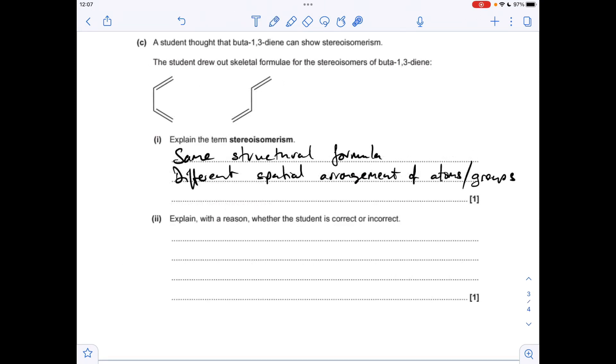Moving on to part c, so just a memory test for the definition. Stereoisomerism is the same structural formula but different spatial arrangements of atoms or groups. And the next part: is the student right to say that buta-1,3-diene can show stereoisomerism?